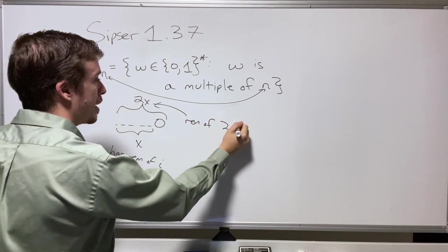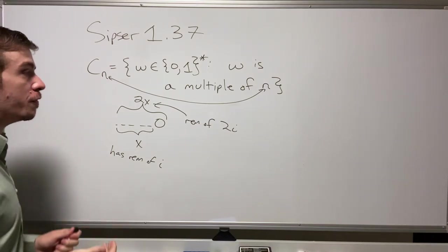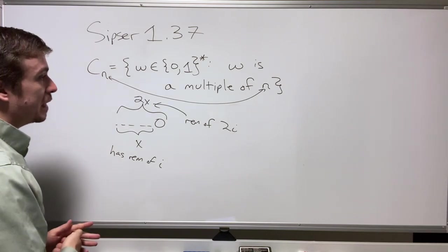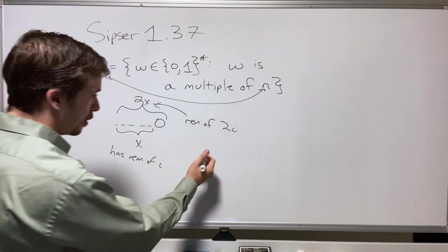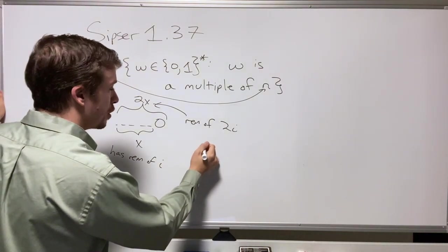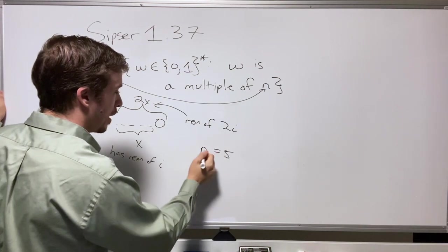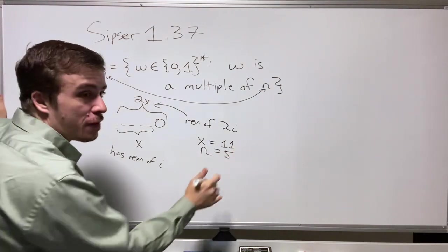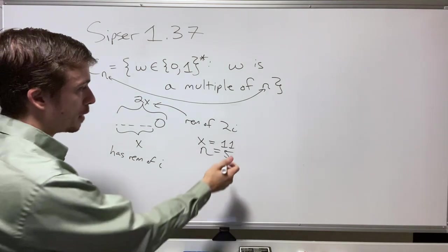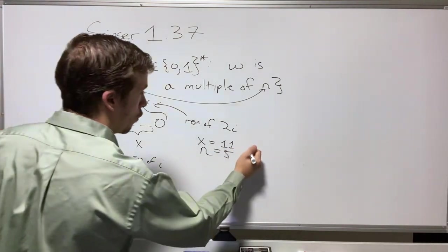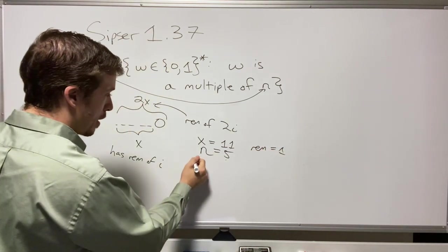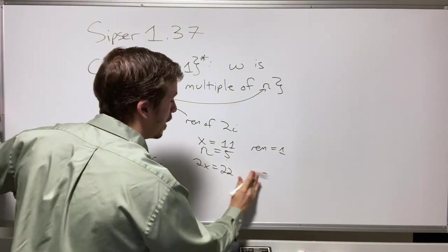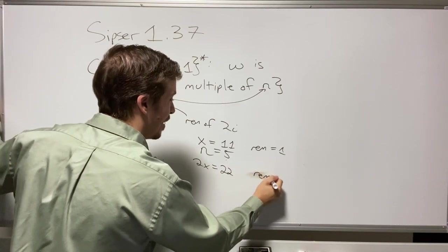You can prove that by induction, but let's just do an example. If n equals 5 and x equals 11, then 11 divided by 5 has a remainder of 1. Then 2x is 22, and 22 mod 5 has a remainder of 2. So the remainder doubled, as expected.